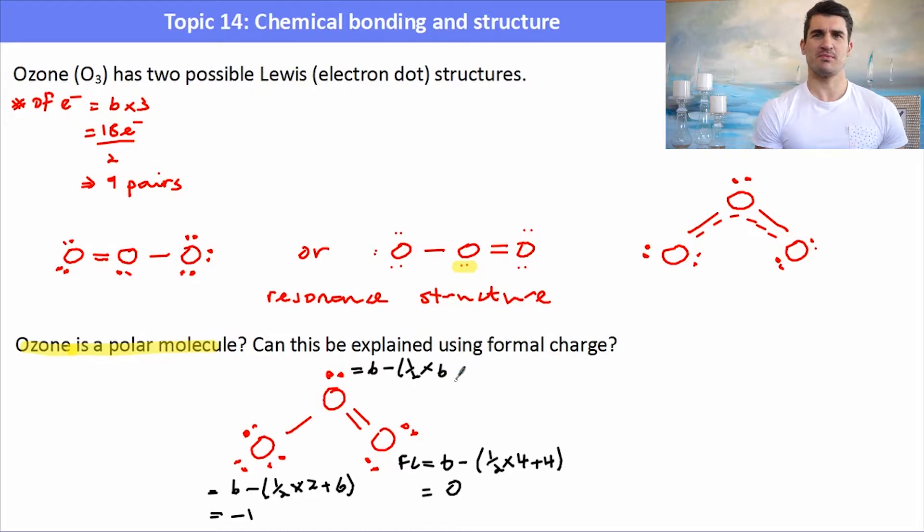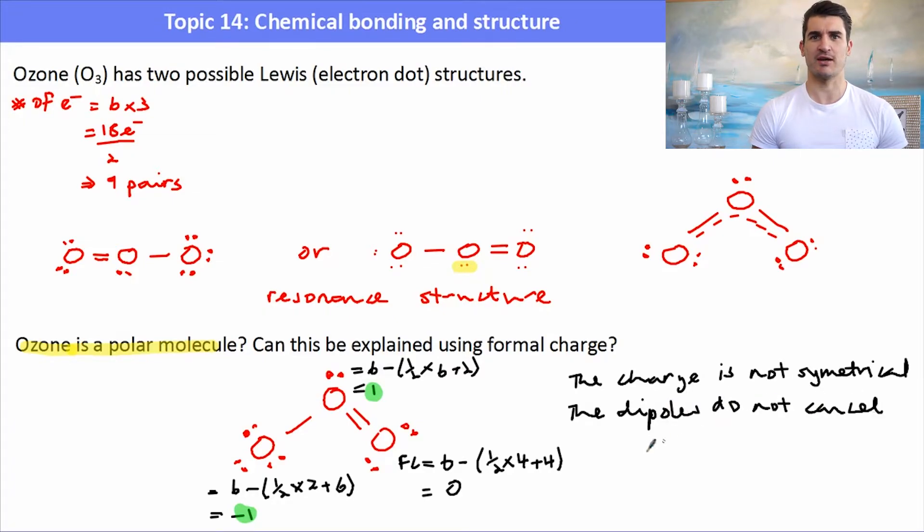What does this mean for it being polar? Well the formal charge for this molecule is not distributed symmetrically. It's an asymmetrical distribution of the formal charge. That means that this molecule will be polar. It's only slightly polar but it is a polar molecule. The fact that the formal charge is not distributed symmetrically means that ozone will carry a charge and it will be slightly polar. The dipoles in this case will not cancel out which means that it is a polar molecule.